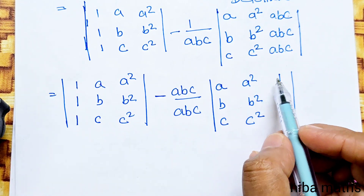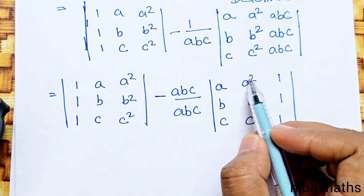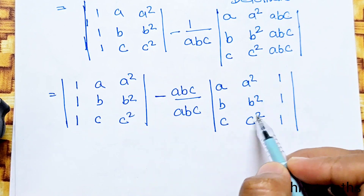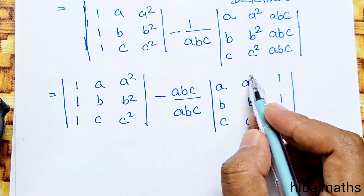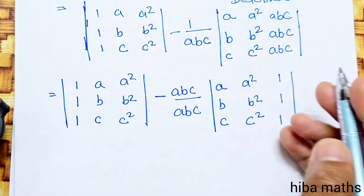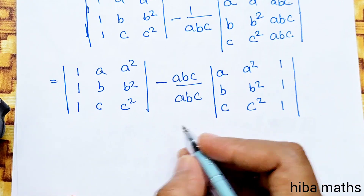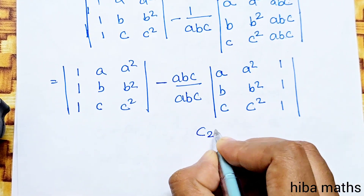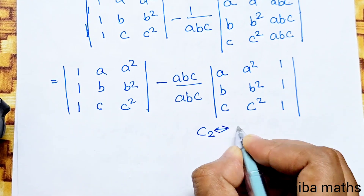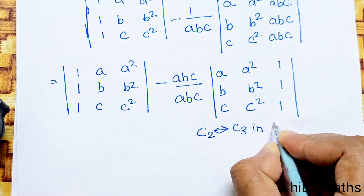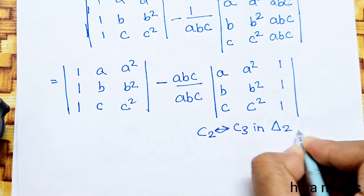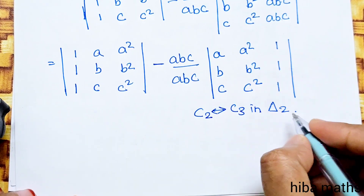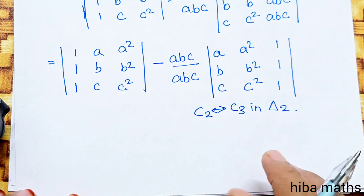What we are doing is we are going to change these two columns. The last entries are A², B², C². So C2 and C3, we are going to interchange in the same way. C2 interchanges with C3 in determinant 2. That is the full formula — we are going to change the same way.